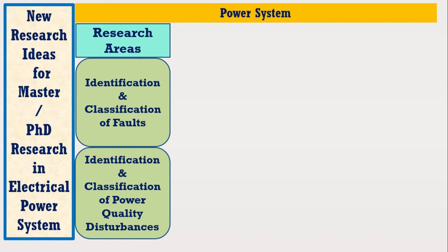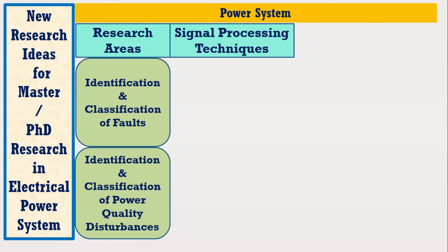The answer is that in most cases, signal processing techniques are commonly used to extract the features of voltage or current signals. Based on this feature extraction, faults or power quality disturbances can be identified and classified.